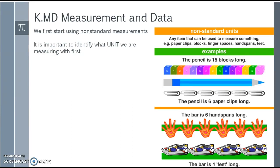Similarly, looking at that bar — if we used our hand span, it would be six hand spans long, but the bar is four feet long. It's basically looking at just that particular foot length, or shoe length might be more appropriate. So again, depending upon what our unit is depends upon how many we're actually going to need.